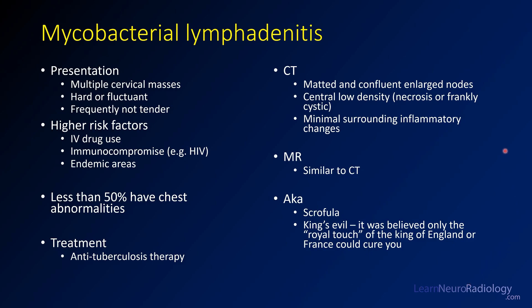On CT you'll often see confluent enlarged nodes with central low density. You will have fewer inflammatory changes than with a pyogenic abscess like a staph infection — you'll see more inflammatory changes with a pyogenic infection. The MR findings are very similar. This is also known as scrofula, historically called the king's evil, as it was thought that only the royal touch of the king could cure you.